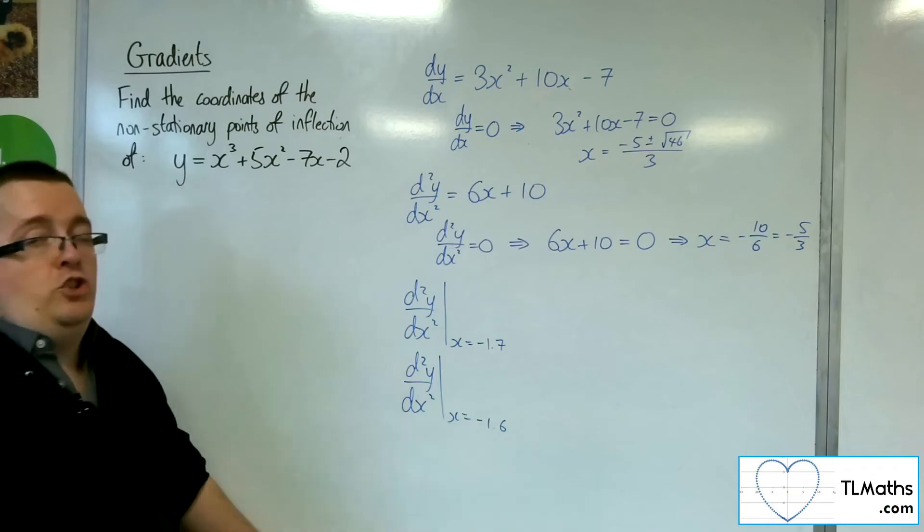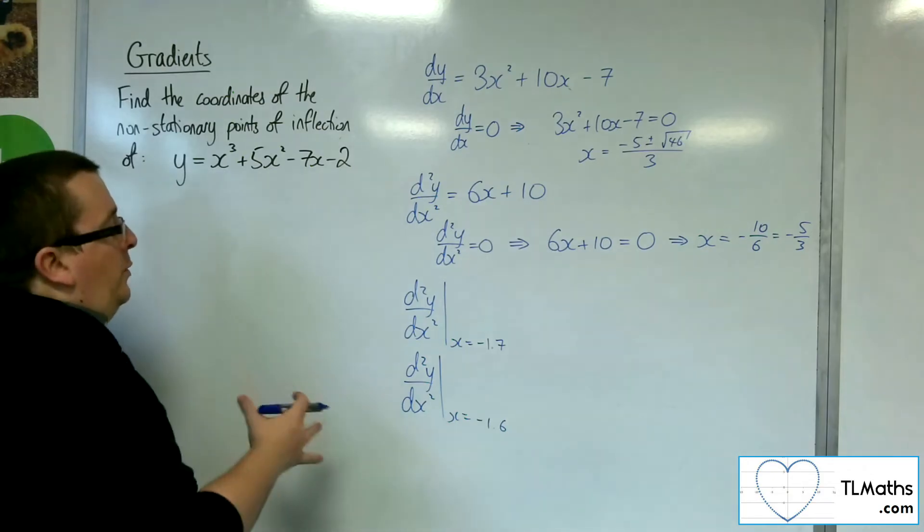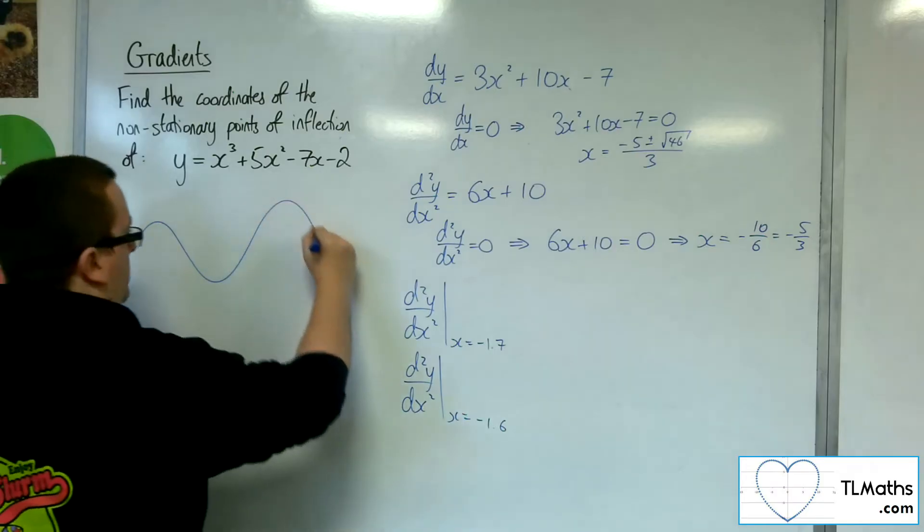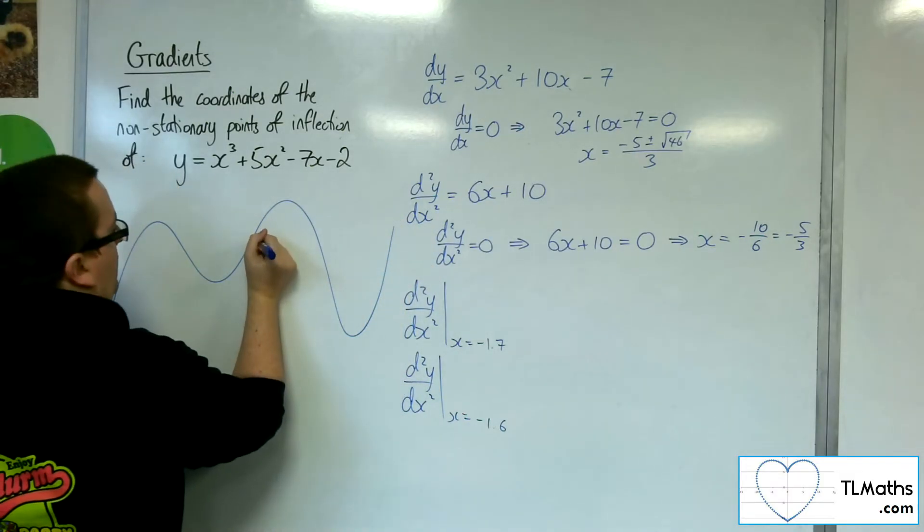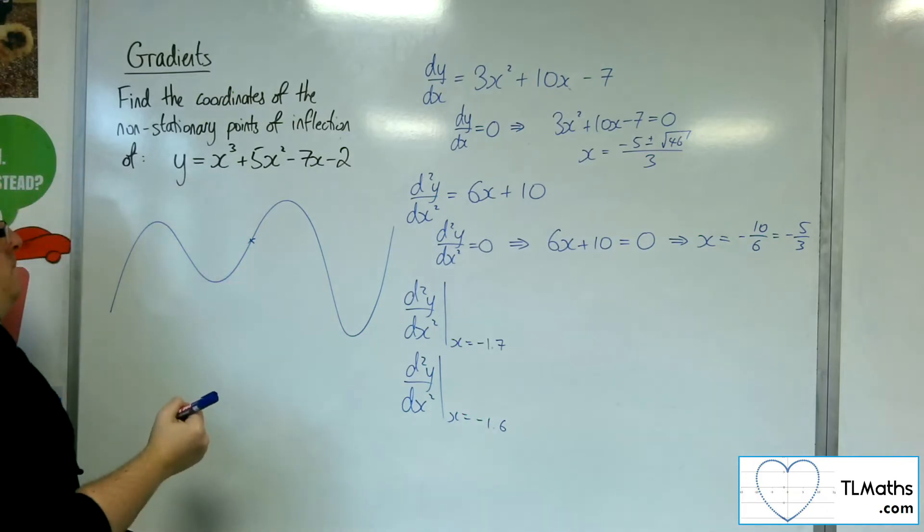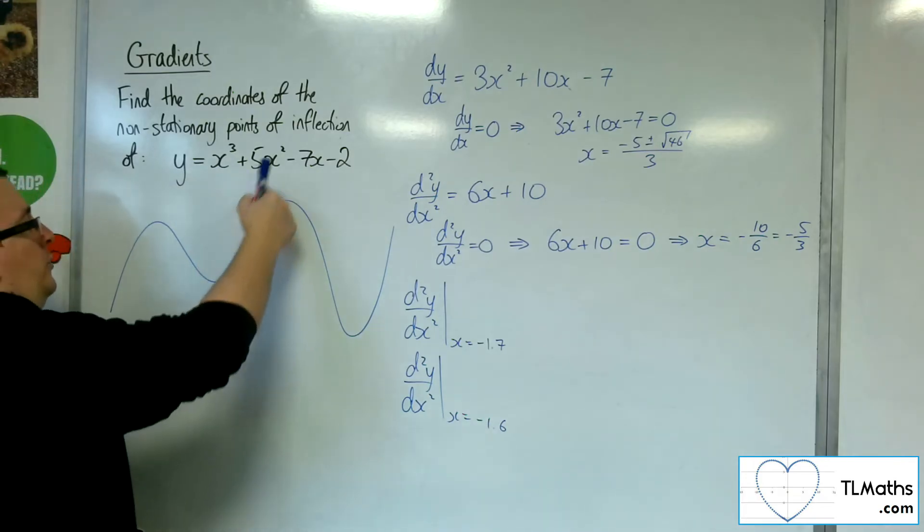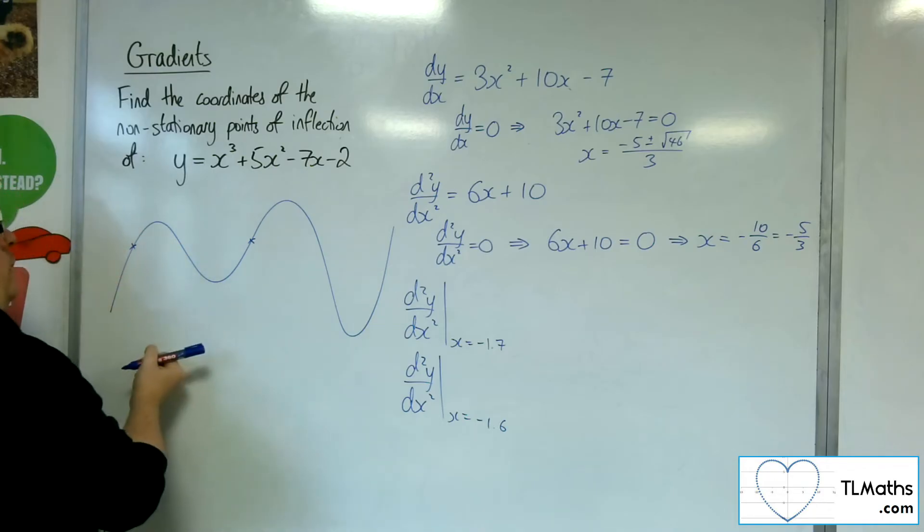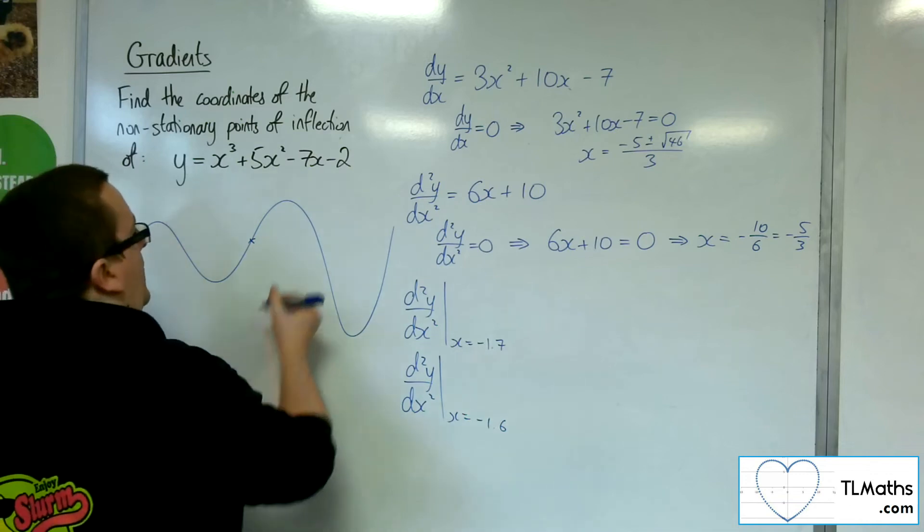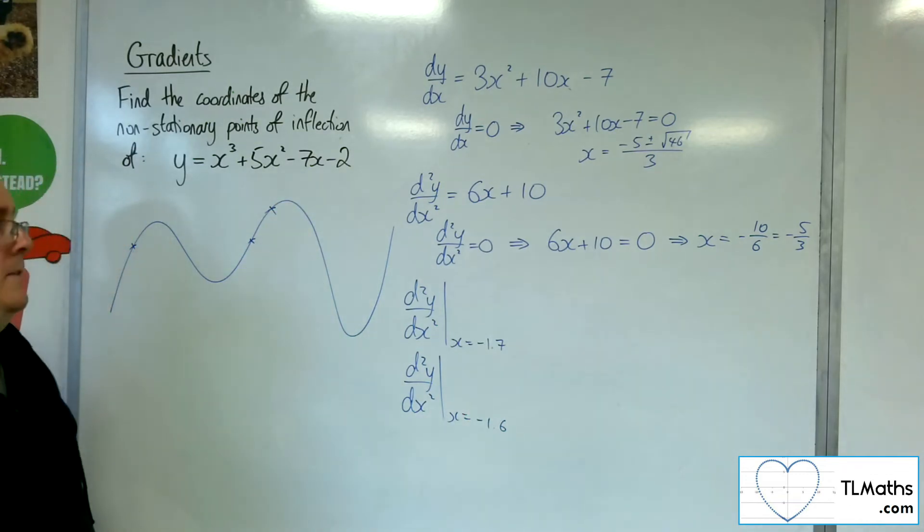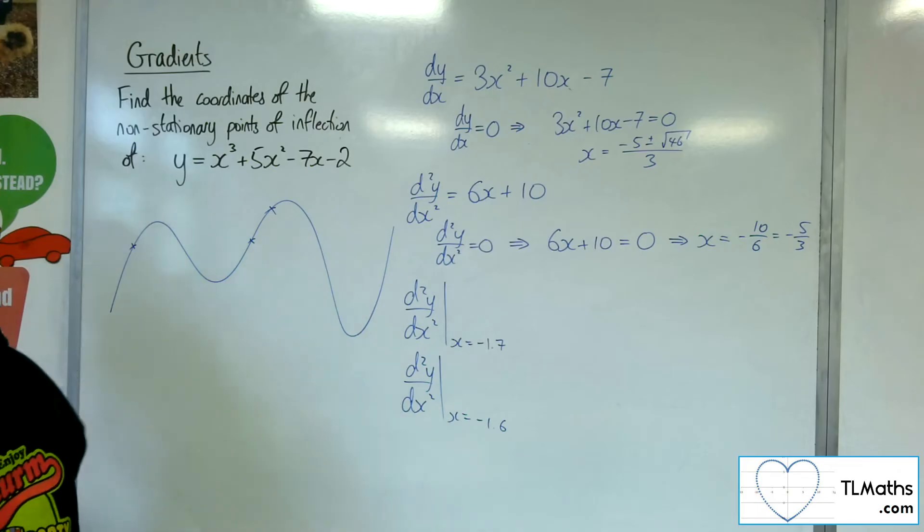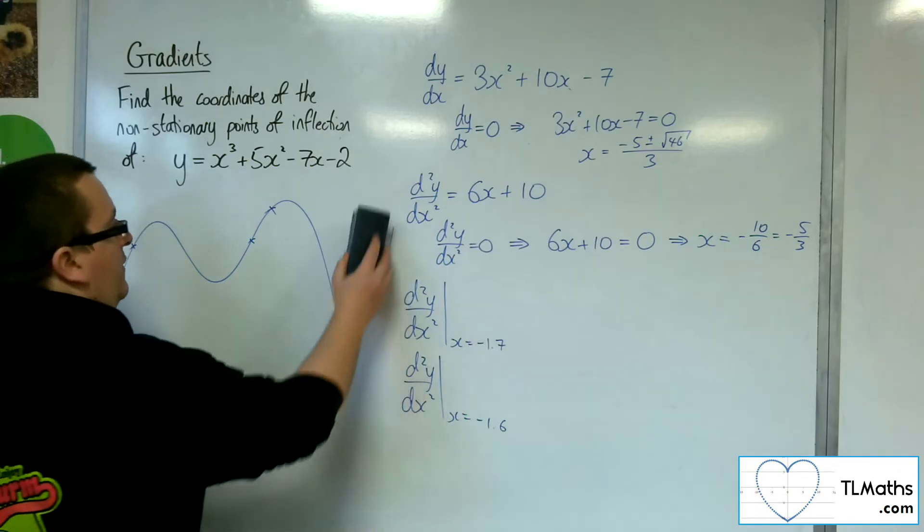Now the points that you choose, you don't want to substitute in points that are too far away. Because if your curve looks something like this, for example, and you're checking this point here where it's going from convex to concave, you don't want to pick a random point over here where it's concave and a point here where it's concave. Otherwise you'll get the wrong impression of what's going on. You want to keep them relatively close.